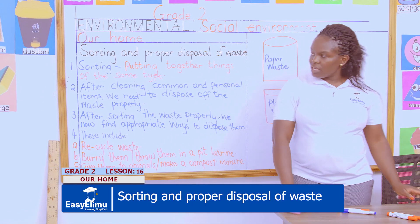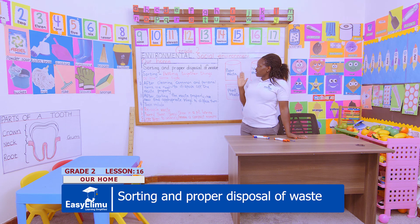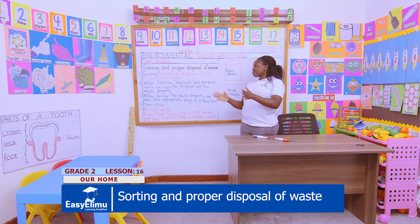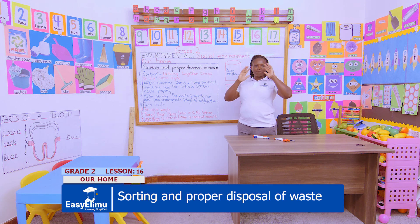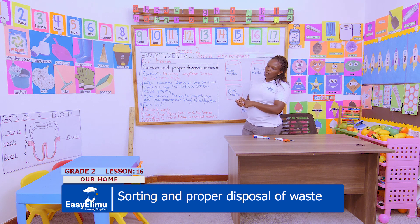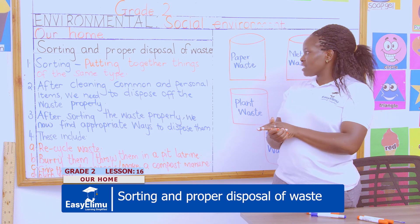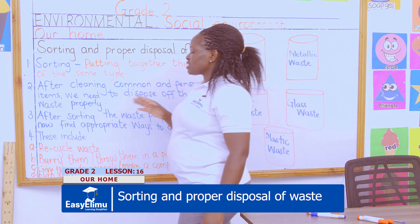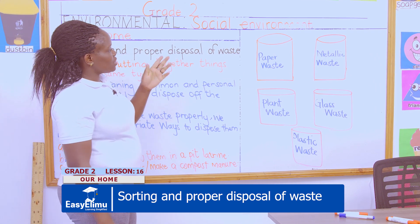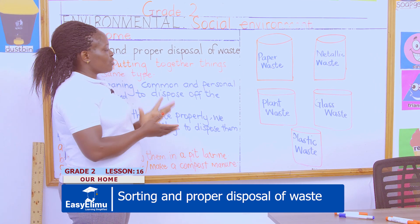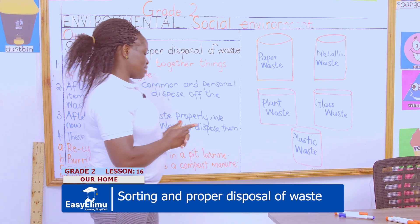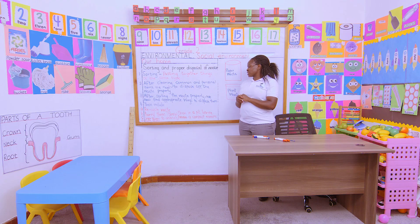So Grade Twos, as we come to the end of our topic — we are talking about sorting and proper disposal of waste. What is sorting? Sorting is putting together things of the same type. After cleaning common and personal items, there is some waste collected. You don't just leave it anywhere. We are supposed to dispose of it properly by sorting into categories: paper waste, metallic waste, plant waste, glass waste, and plastic waste.